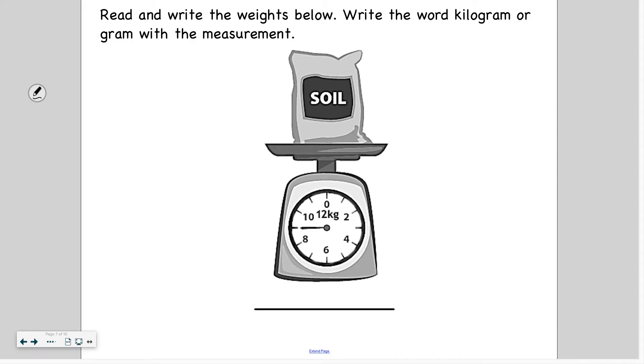All right, welcome back. So I see that it's skip counting by twos, 2, 4, 6, 8, 10. But in between there's other numbers. So that would be 1, 3, 5, 7. And this would be 9. So that means that this bag of soil weighs 9 kilograms. And I know it is kilograms because I see the kg symbol right there.